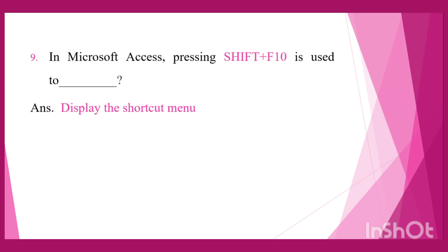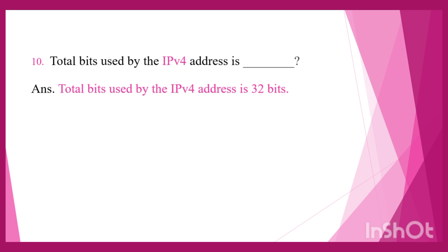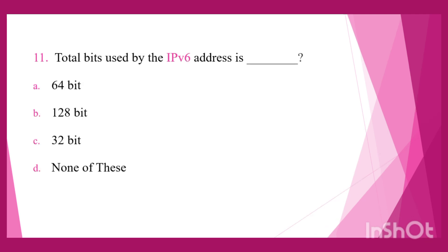Question 10: Total bits used by IPv4 address — Option A: 64 bits, Option B: 256 bits, Option C: 32 bits, Option D: None of these. The total bits used by an IPv4 address is 32 bits. Right answer: Option C, 32 bits.